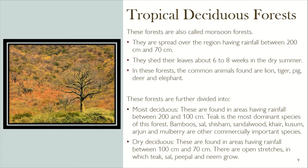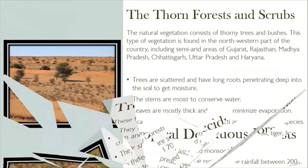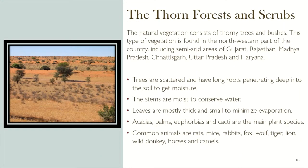These forests are further divided into moist deciduous forests, found in areas having rainfall between 100 and 200 centimeters. Teak is the most dominant species; bamboo, sal, shisham, sandalwood, sal, kusum, arjun, and mulberry are other commercially important species. Dry deciduous forests are found in areas having rainfall between 70 and 100 centimeters, with open stretches in which teak, sal, peepal, and neem grow.